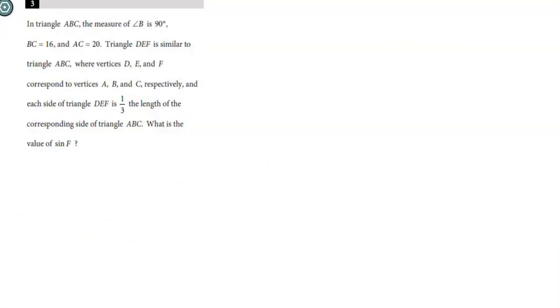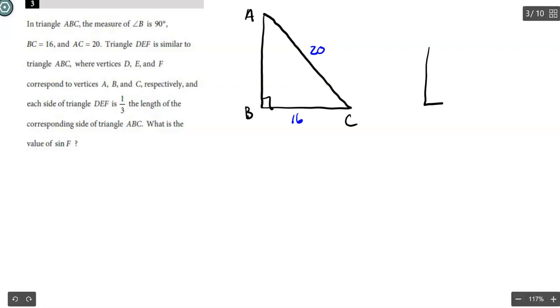Number three, triangle ABC, the measure of B is 90. So let me sketch this out. We have triangle ABC and B is the 90. B to C is 16, and A to C is 20. DEF is similar. They're one-third of the length. So everything is divided by three. And ultimately, they want to find out what is the value of the sine of F.